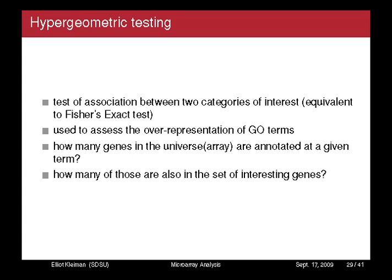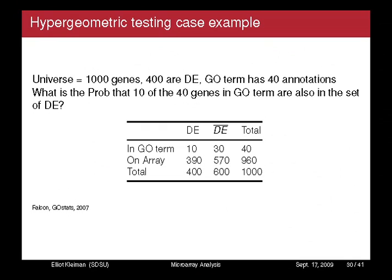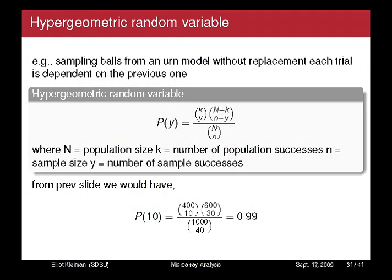I used hypergeometric testing to look for KEGG pathways and GO terms. It's basically a Fisher's exact test — you're testing the association between two categories. The question is: how many genes on the array are annotated at a given term, and how many of those are also in your set of interesting genes? For example, if you have 1,000 genes in your array and your GO term category has 40, what's the probability that 10 of the 40 are also in your interesting gene set? You observe this from the annotation, then ask how likely that is to happen. With the example, you get a p-value of 0.99. If you include the universe — the population size — you'll get a smaller p-value.